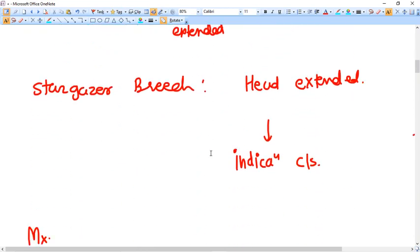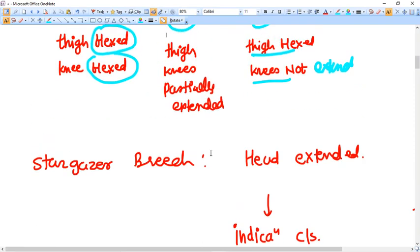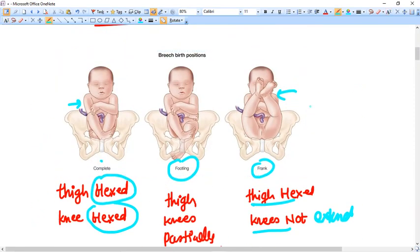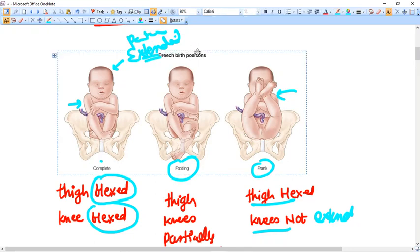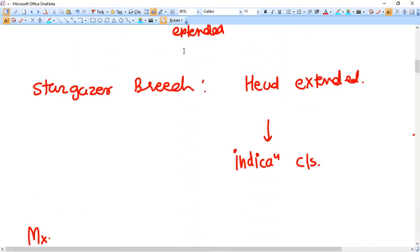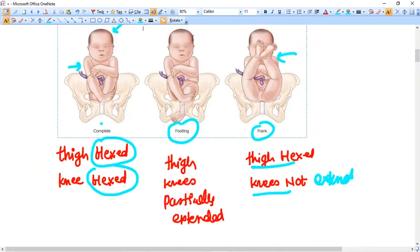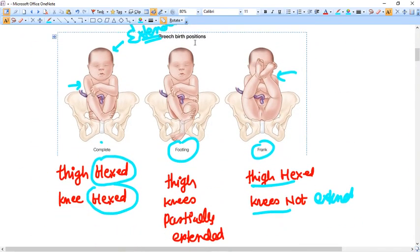Now there is one another type of breech that is stargazer breech in which in any of this breech presentation the head of the fetus is if it is extended or partially extended it is called stargazer fetus. Like the fetus is sitting in the uterus and gazing towards the star. Now this was a very brief introduction to the breech presentation.